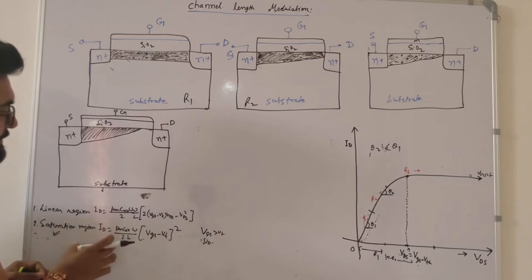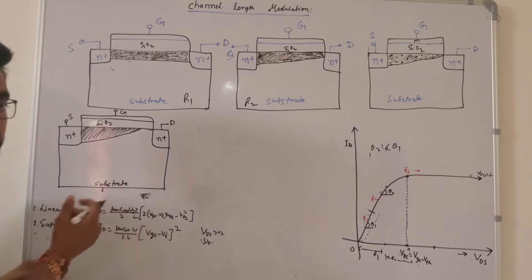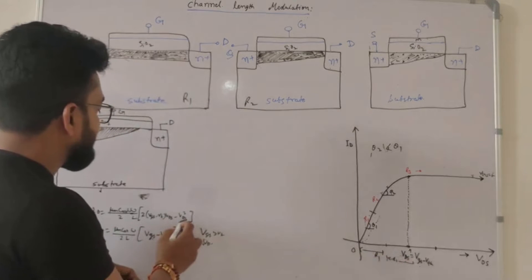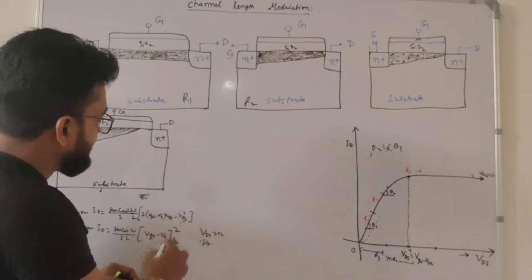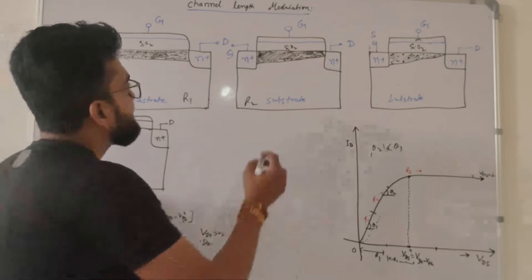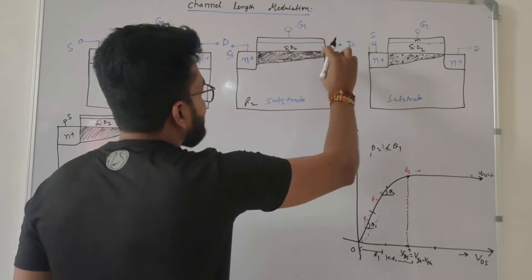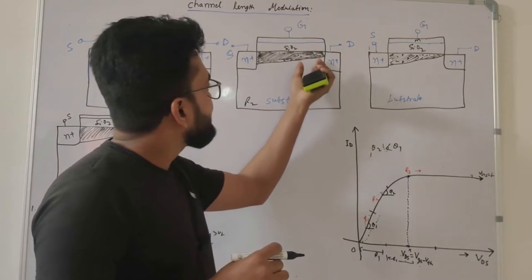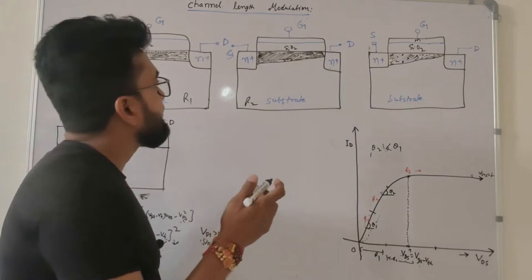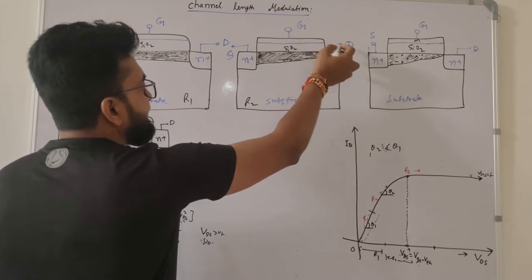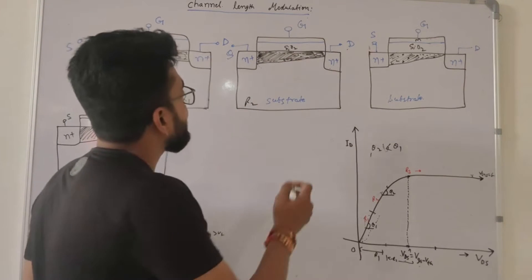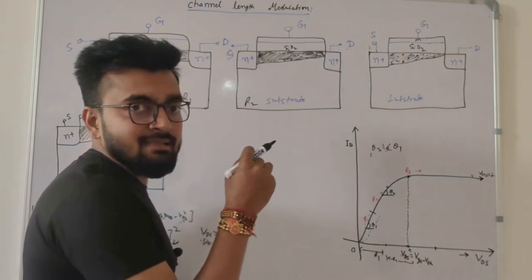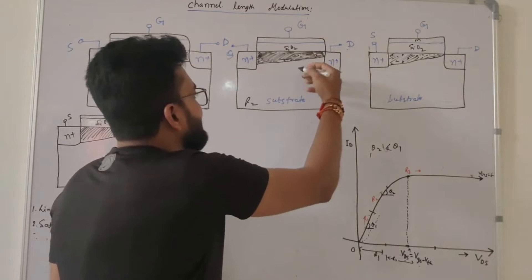At the pinch-off point, the drain current ideally becomes constant. When VGS minus VT equals VDS, substituting into the linear drain current equation gives us the saturation drain current equation. The reason for the channel narrowing near the drain is the effective electric field produced jointly by the drain and gate near the drain, which reduces the charge density — the majority carriers are fewer near the drain.